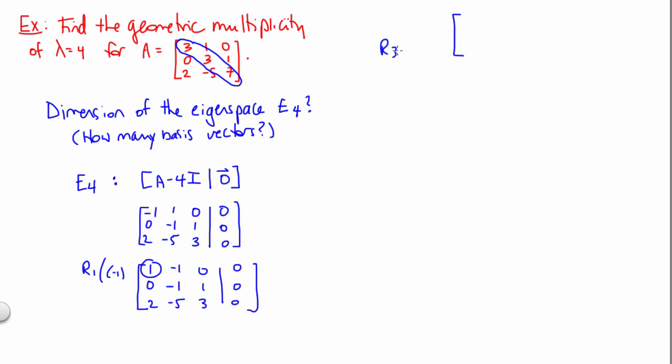And then we can take row 3 minus 2 times our pivot row. So that's going to give us 0, negative 3, and positive 3, and then a 0 in our bottom row. Top two rows won't be changing.